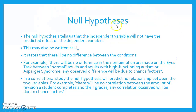Null hypotheses. The null hypothesis tells us that the independent variable will not have the predicted effect on the dependent variable. This may also be written as H0. It states that there will be no difference between the conditions. For example, there will be no difference in the number of errors made on the eyes task between normal adults and adults with high functioning autism or Asperger syndrome. Any observed difference will be due to chance factors. That's from Baron-Cohen's study on adults with autism.